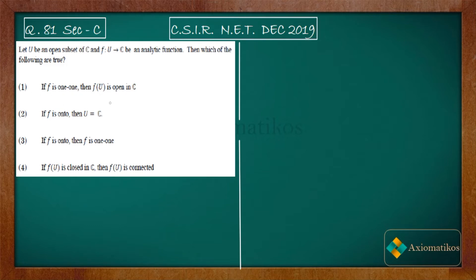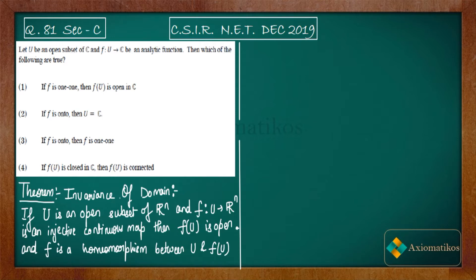For option one, I want you to remember a theorem. We are using the Invariance of Domain theorem rather than the Open Mapping Theorem. The Open Mapping Theorem is a very famous result in complex analysis, but we cannot use it here because in this problem it was not given that U is a domain — meaning an open and connected set. The Open Mapping Theorem works for domains only.